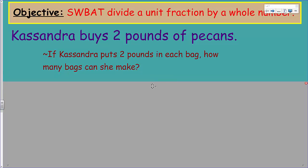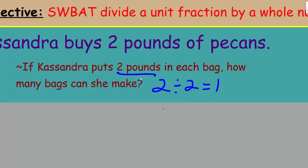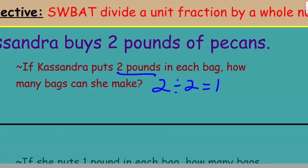You're thinking we can solve this in our heads, and I agree. However, we're going to write a division equation. We have two pounds — that's our dividend. We're dividing by two because that's the size of the group. Two divided by two obviously equals just one bag — we can make one group of two.